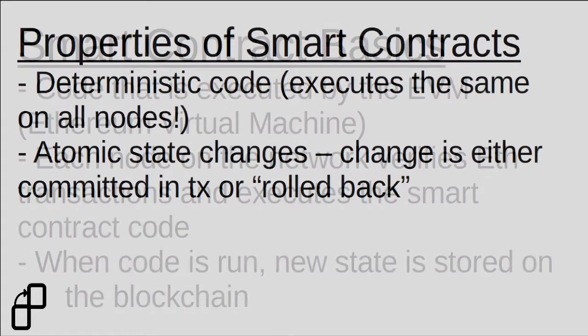So what are some of the properties of smart contracts? First, and a very important property, is that smart contract code is deterministic. Because we're operating on a decentralized network where all nodes work together to validate transactions, all the code has to run the exact same on every different node that is validating that function call to the smart contract. As well, state changes in Ethereum are atomic. Anytime a smart contract function is called and executed on a node, the state change is either fully committed, as in the function call completed successfully, or no changes are committed whatsoever. There's never any intermediate states committed to the blockchain during the middle of a function call.